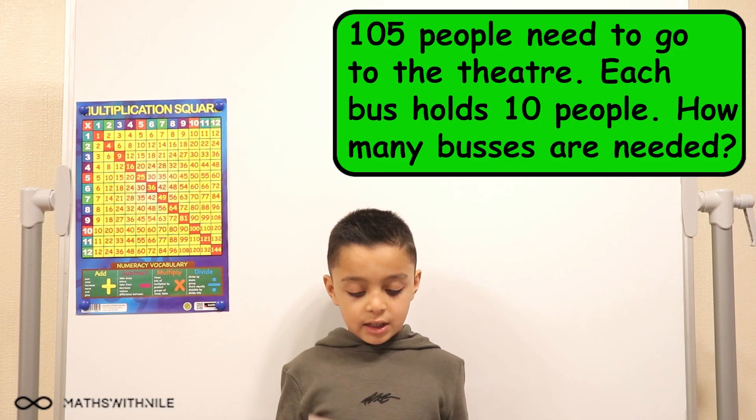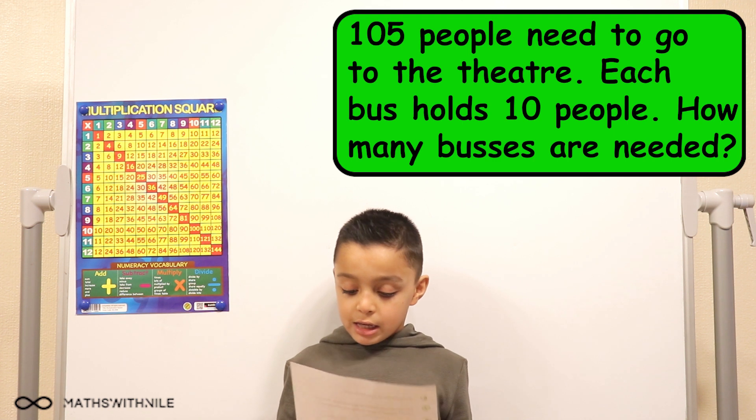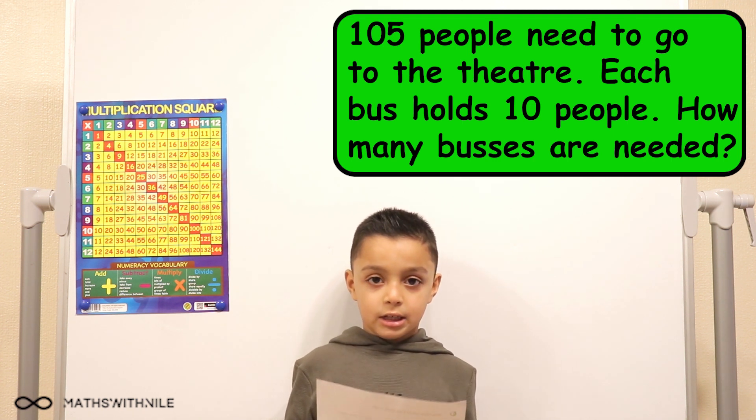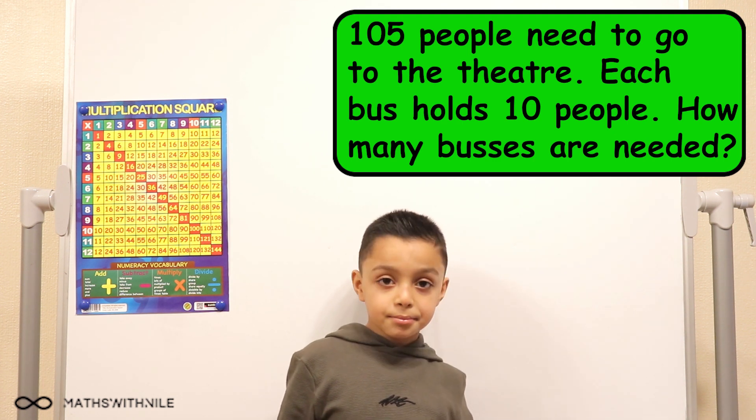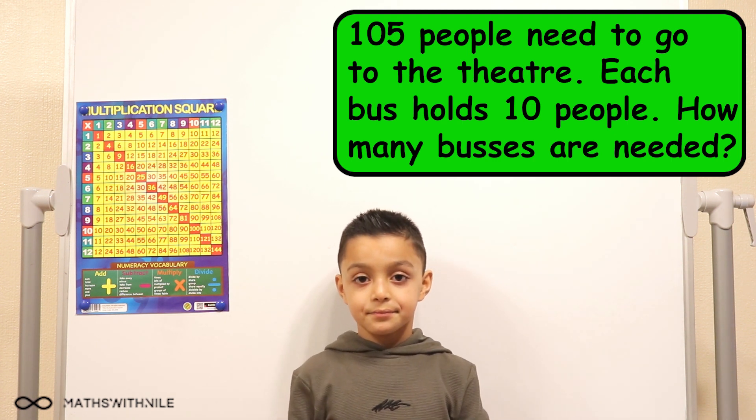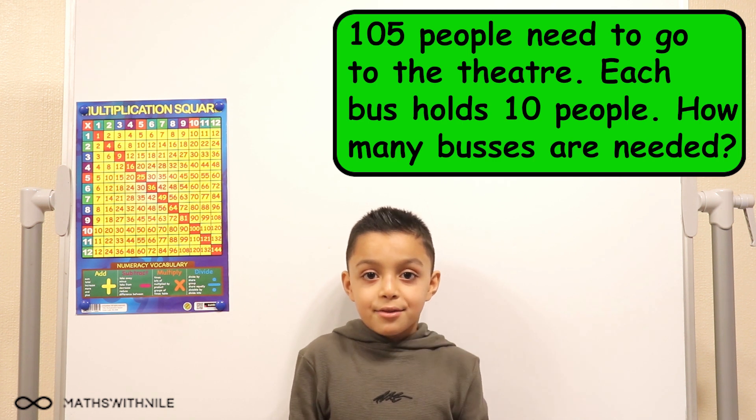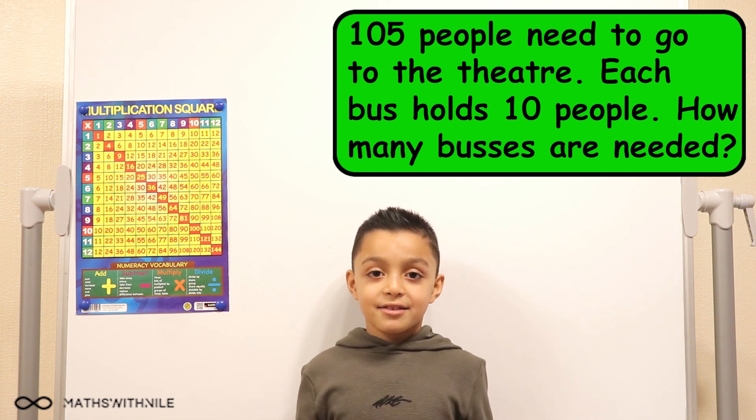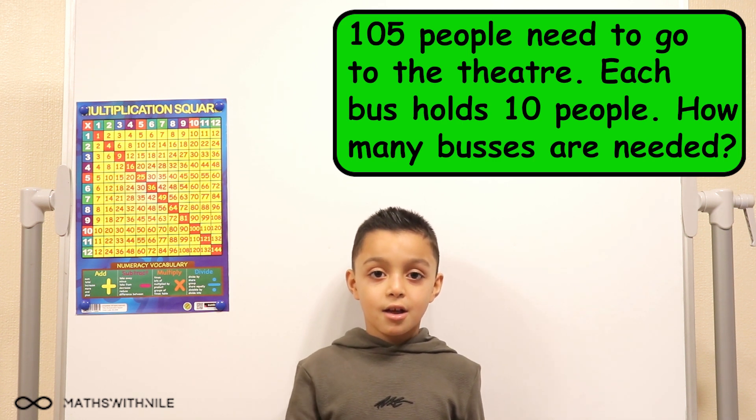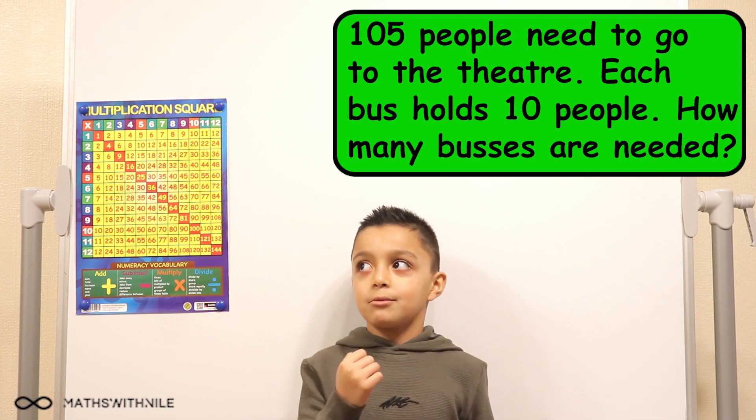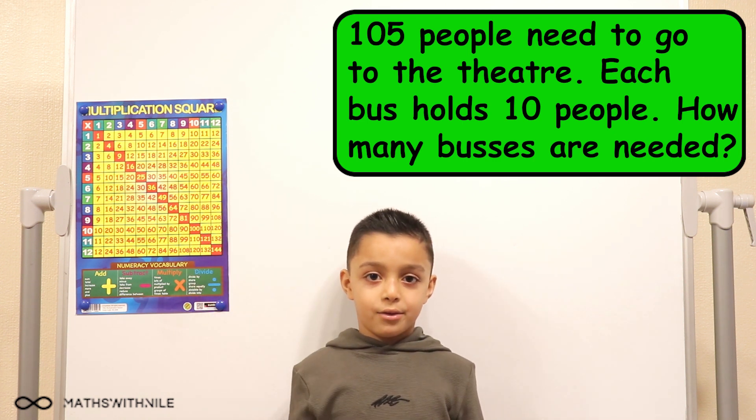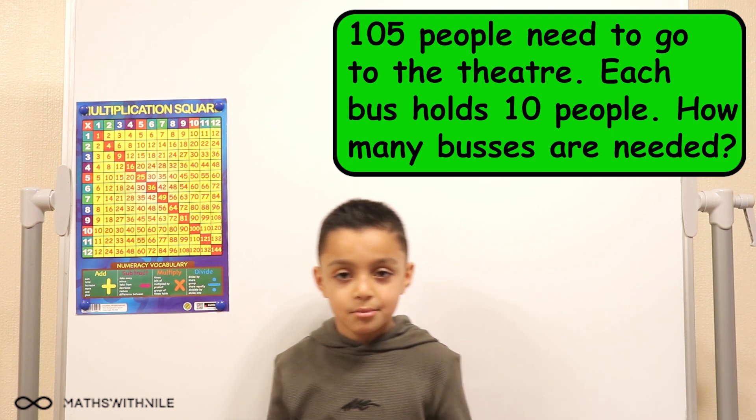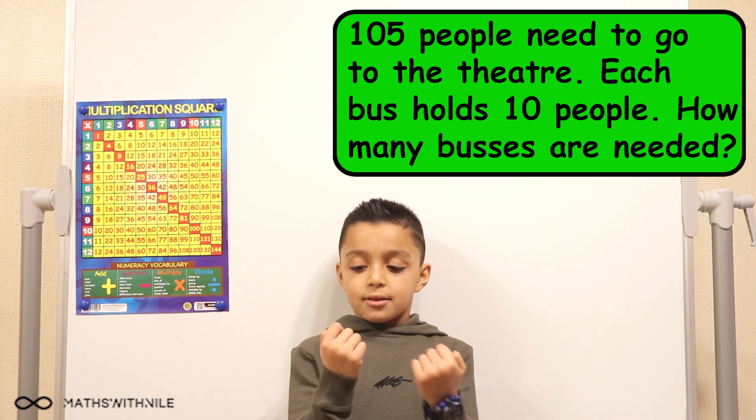105 people need to go to the theatre. Each bus holds 10 people. How many buses are needed? So that's a tricky one. Yeah. Any ideas? Yeah. So first we have to work out how many times 10 will go into 100. And then we just add one more because 5 doesn't take up the whole bus. Oh, that's interesting. So work out how many times the 10 goes into 100 first.